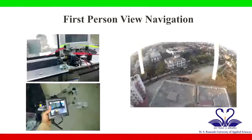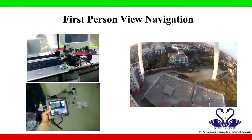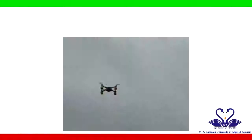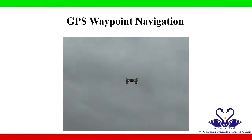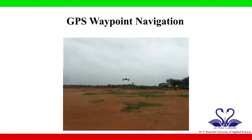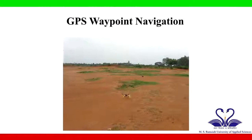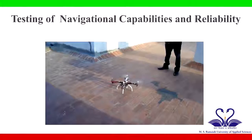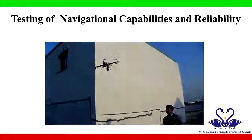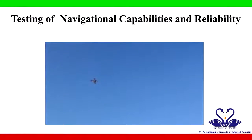The pre-programmable autonomous system enables the UAV to navigate even without direct control from the ground station. With the help of the integrated autonomous system, the quadcopter can navigate through predefined GPS waypoints to reach the destination. Various trials were carried out to test the navigational capabilities and the reliability of the developed UAVs.